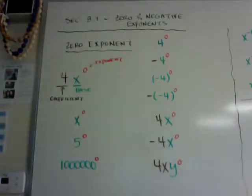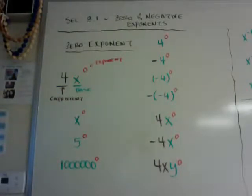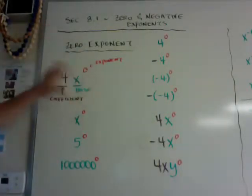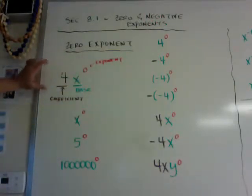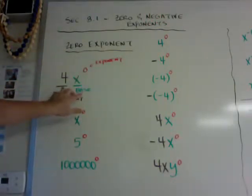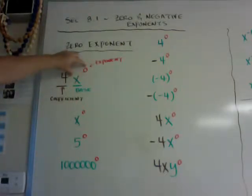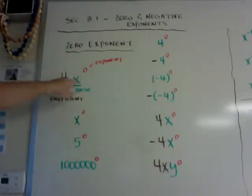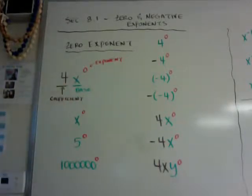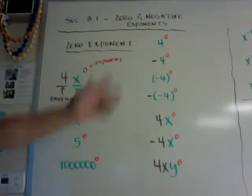Hi guys, this is section 8.1 which is zero and negative exponents, and we'll also be evaluating with negative exponents. I wanted to do a quick review. Whenever you have a term like this, or a monomial, the exponent is in red, the base is only what's in front of the exponent, and the coefficient is the number in front of it. The only thing that goes to the exponent is the base — whatever is in front of it.